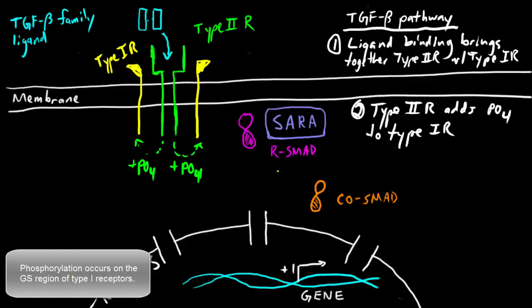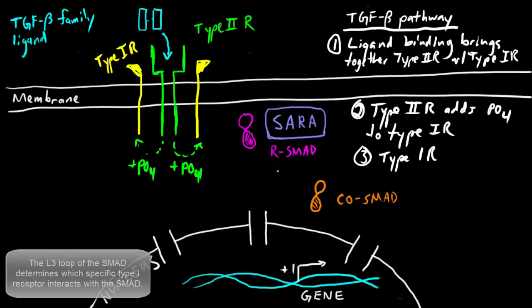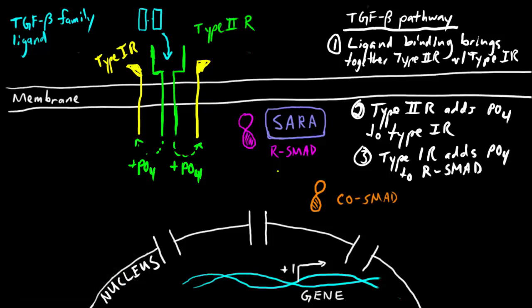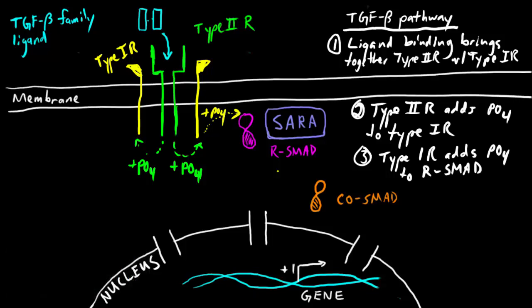After this happens, you activate the type 1 receptors. The type 1 receptors can then phosphorylate their targets, which are the receptor SMADs, the RSMADs. This event happens on the MH2 domain of the RSMAD. In effect, what this does is it lets the RSMAD release from this anchor protein called SARA. SARA stands for SMAD anchor receptor activation.